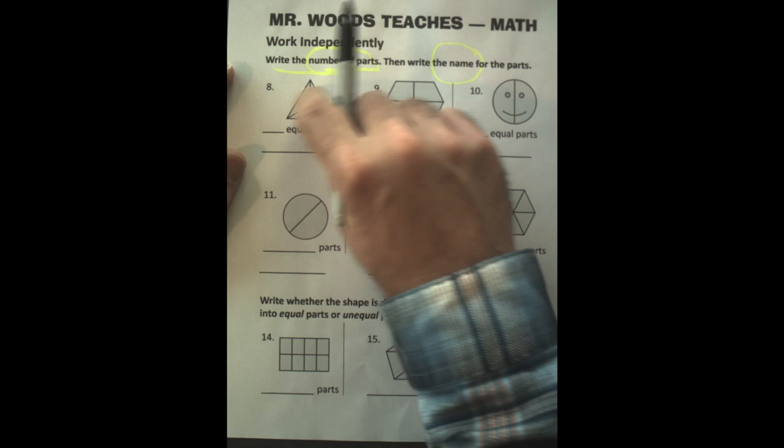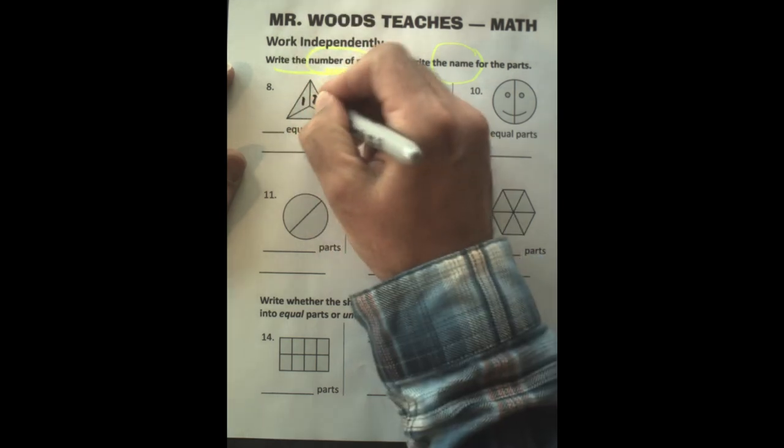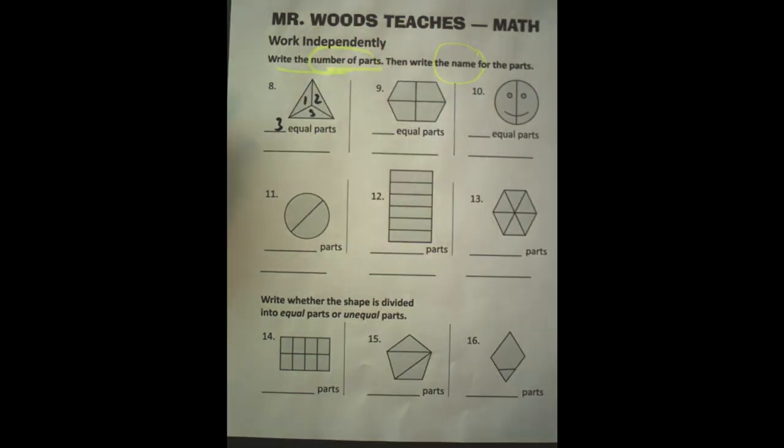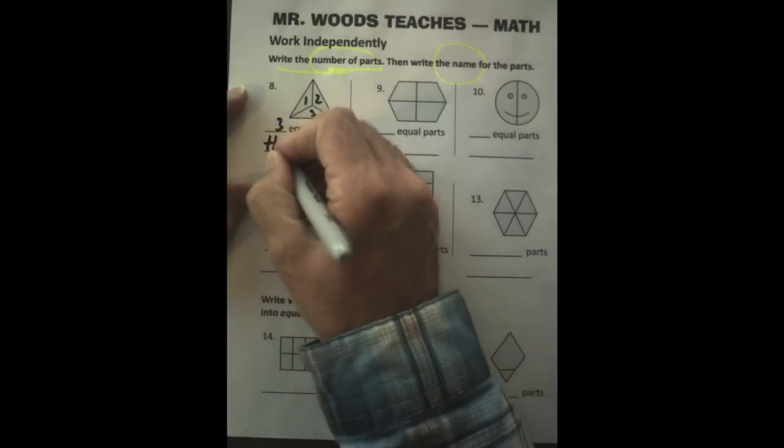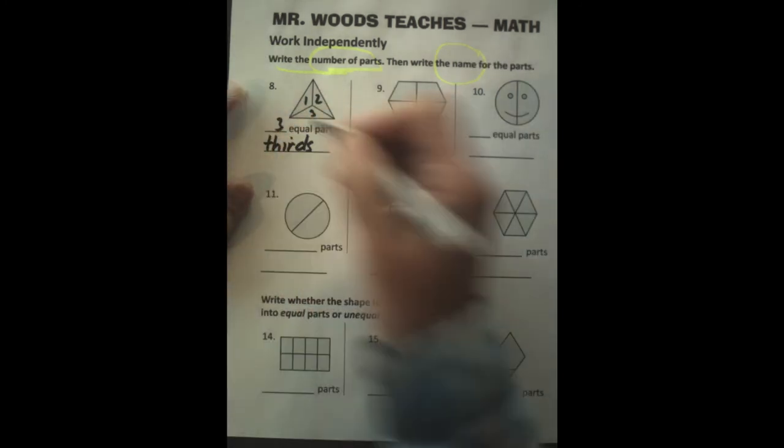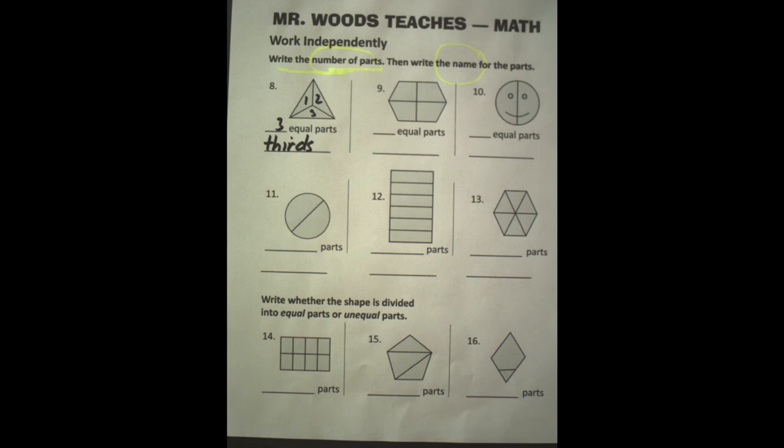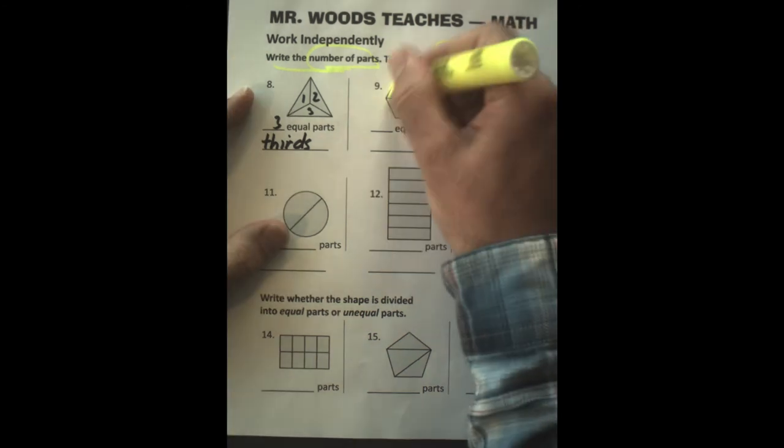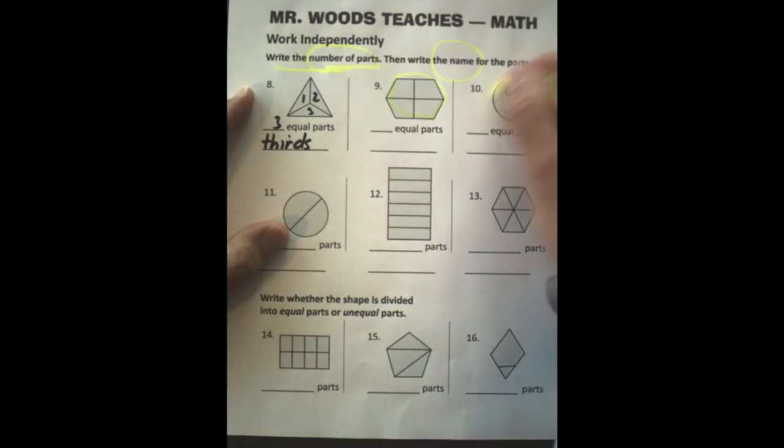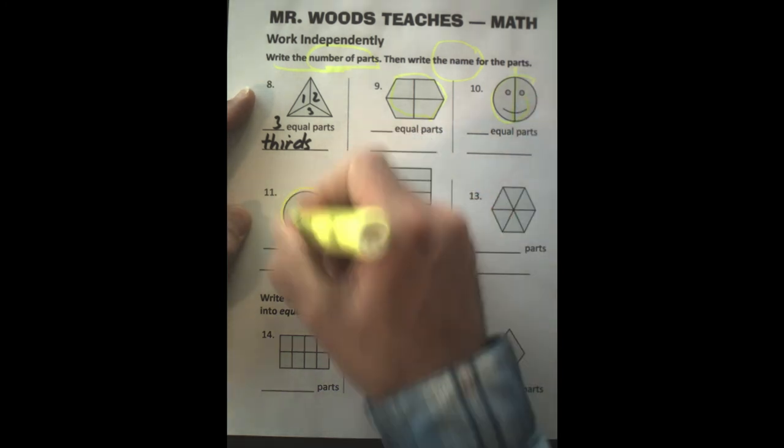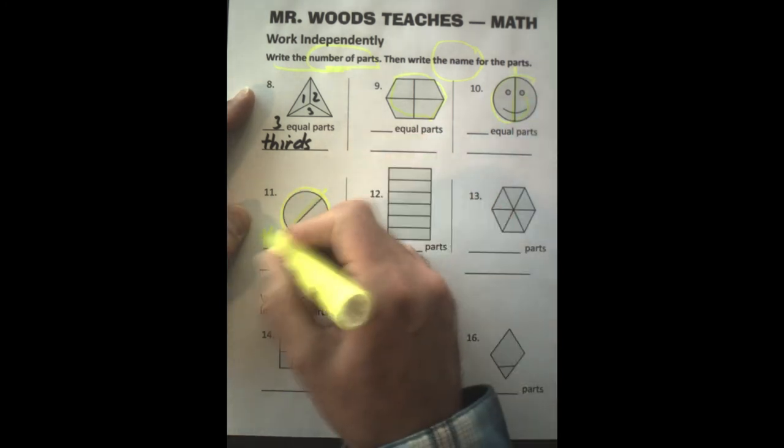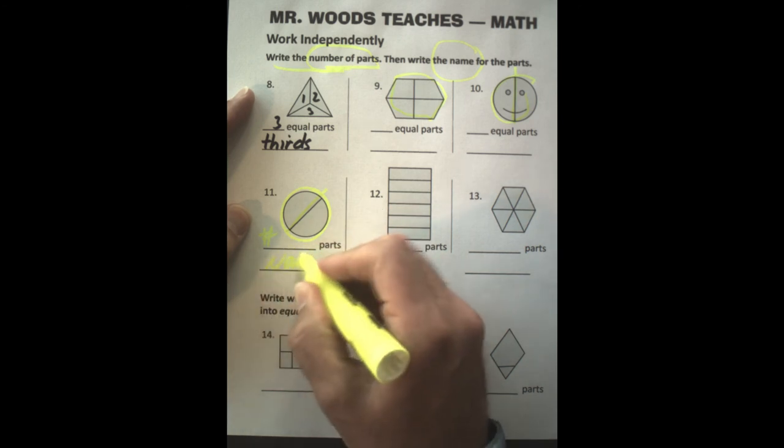We have one, two, three. So one, two, three, three equal parts. And they are thirds. So pay attention to what the shape has for you. And we're looking for the number and the name for those parts.